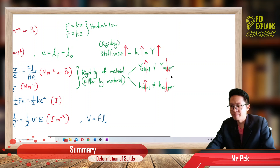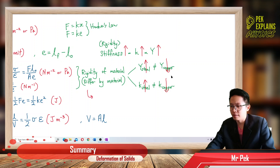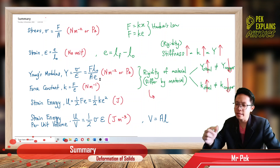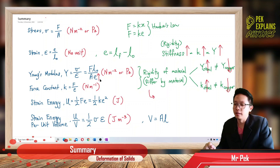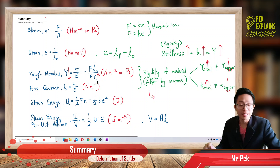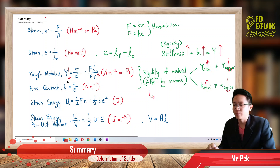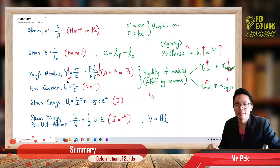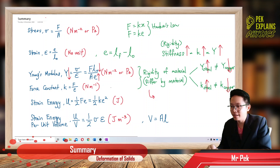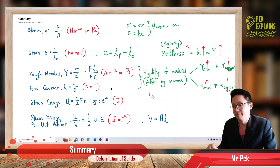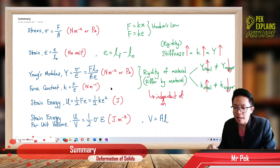Can we say the higher the elongation, the lower the Young's modulus? No. Can we say the smaller the original length, the lower the Young's modulus? No — it does not depend on dimension. It is wrong to say that. Young's modulus and force constant are independent of the dimension of the object or wire.